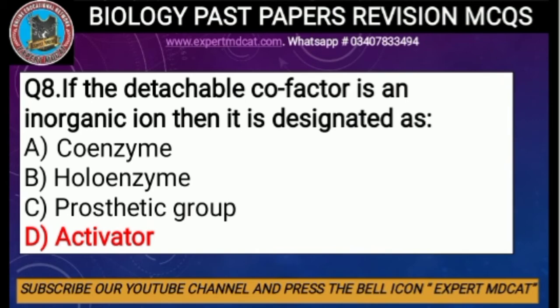Question number eight: if the detachable cofactor is an inorganic ion, then it is designated as. If the non-protein part is organic it is called a prosthetic group or coenzyme. If the cofactor is inorganic — for example, an inorganic ion — then we call it an activator. The correct option is D, activator.